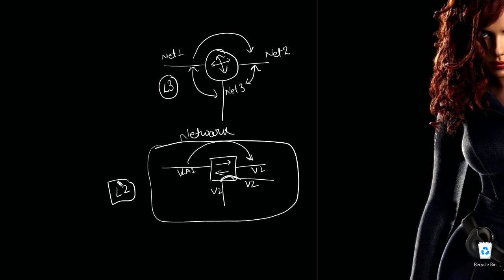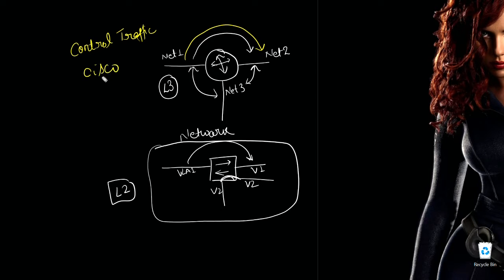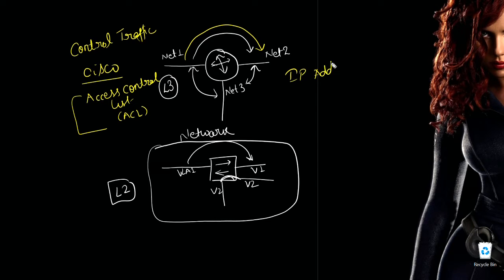Those are the functions of switches and routers. Our requirement is that while traffic was traveling freely through the router, we want to control it. Traffic control at Layer 3 can be done using Cisco routers via Access Control Lists, or ACL. Other routers like Juniper have similar concepts with different names, but the feature is the same — controlling traffic based on IP address and port number.